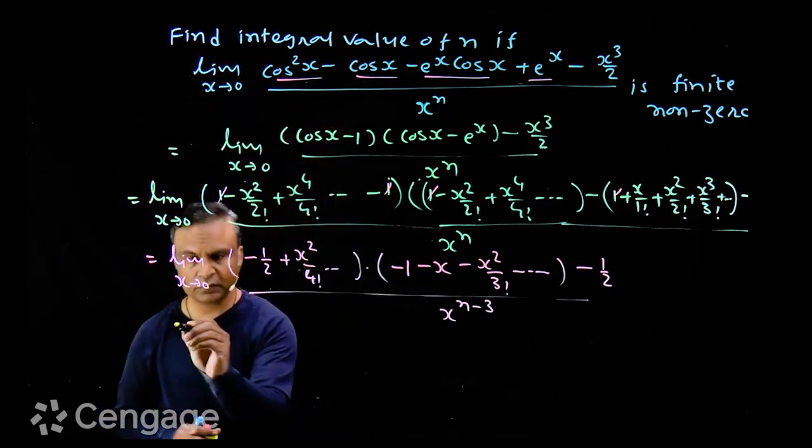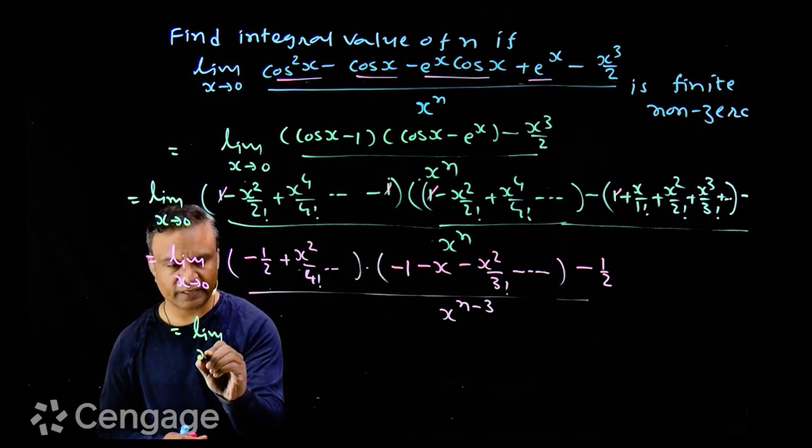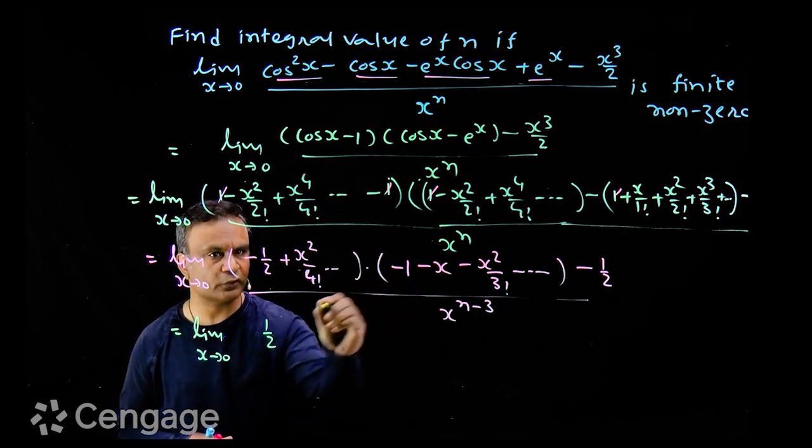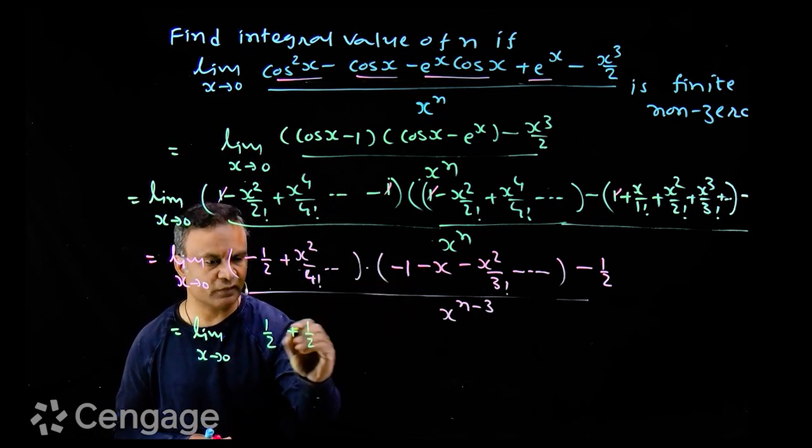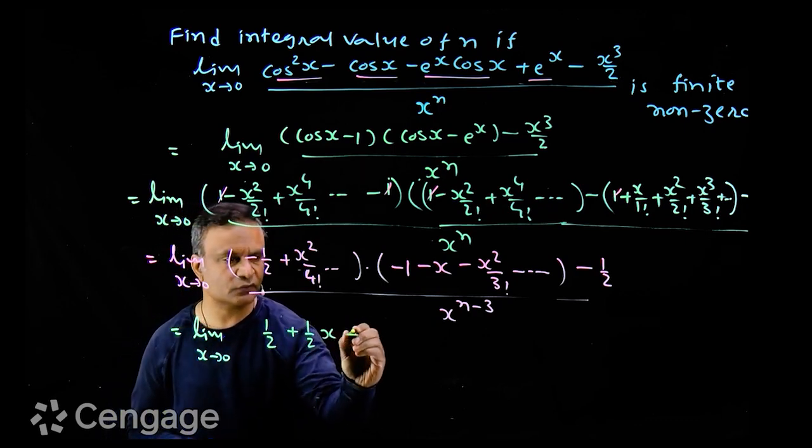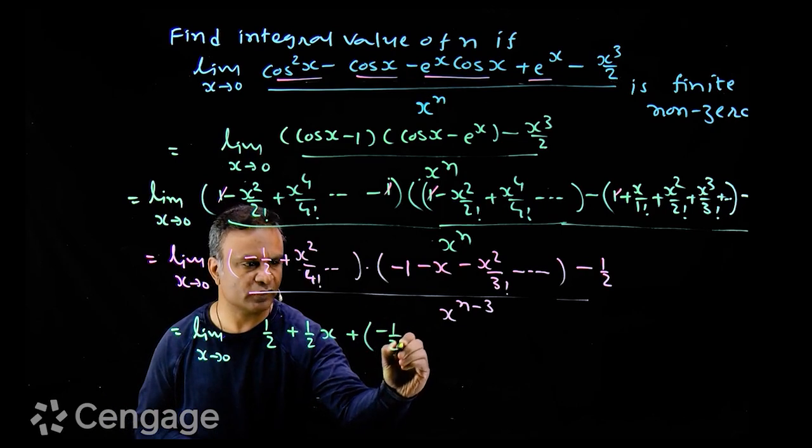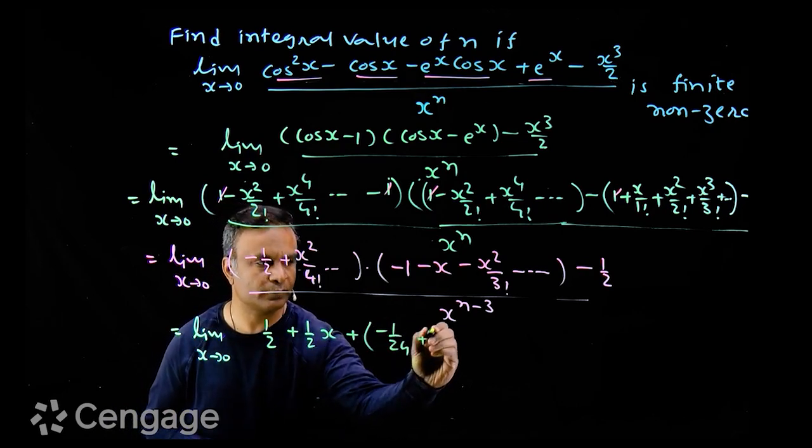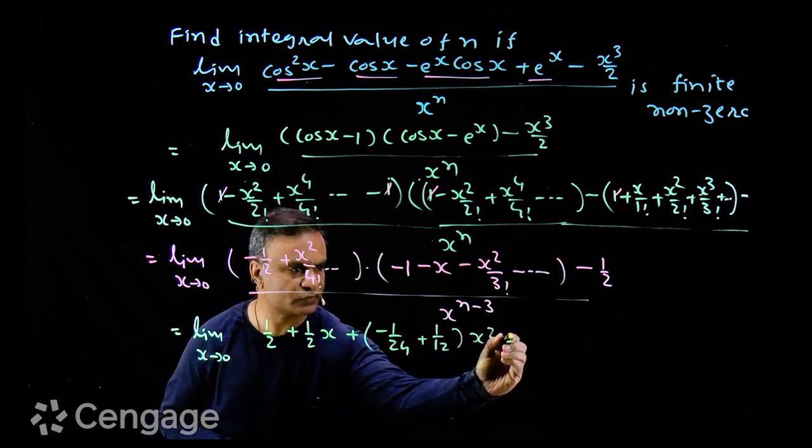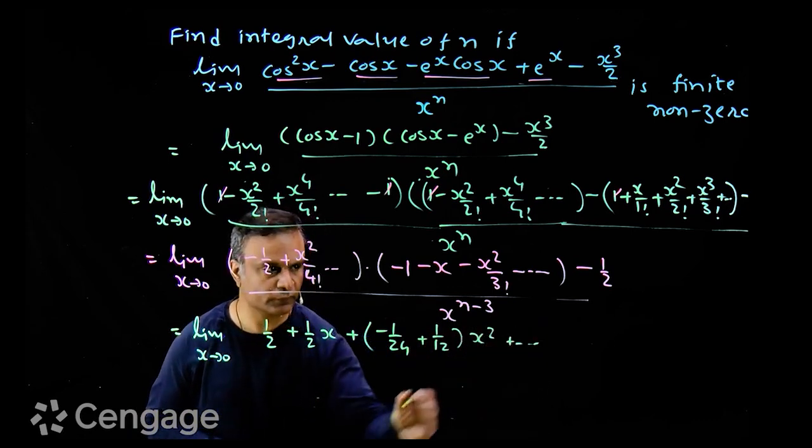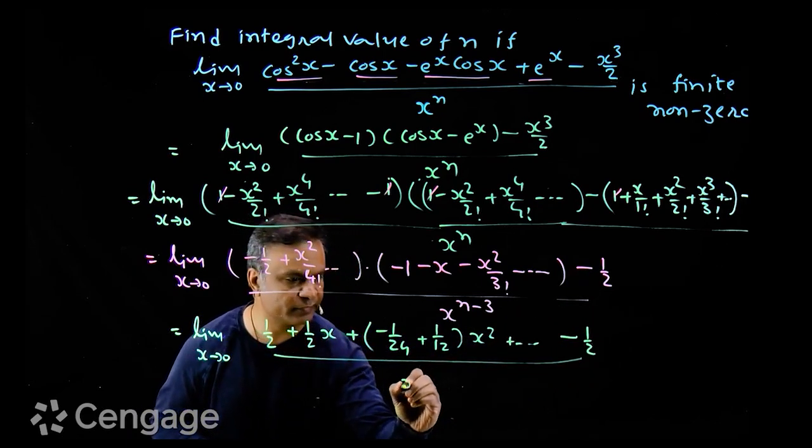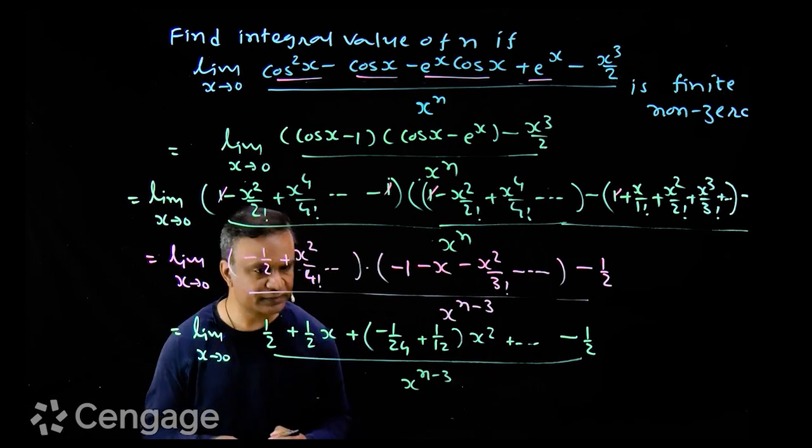So we have limit x tends to zero of, constant term will be half, coefficient of x will be half. So we have half plus half x, then coefficient of x square will be minus 1 upon 24 plus 1 upon 12. So we have this multiplied by x square and so on minus half. This divided by x power n minus 3.